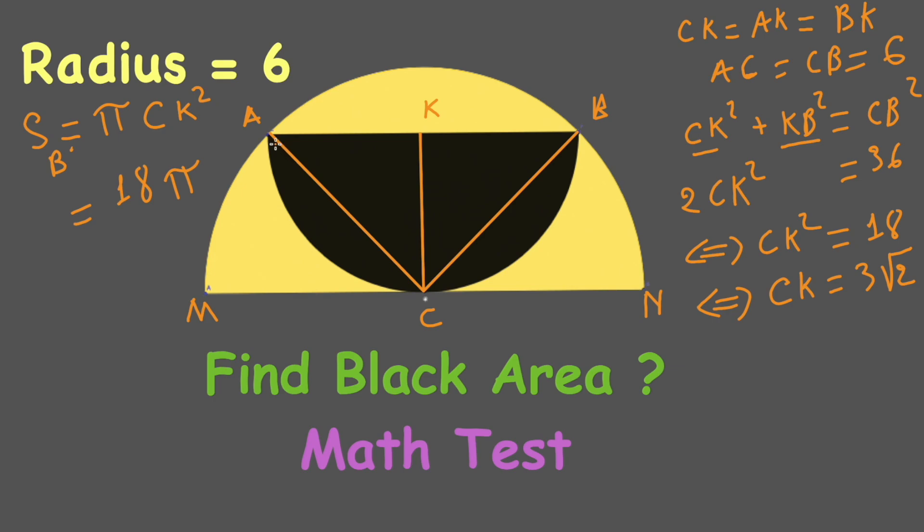But the problem requires us to calculate the semicircle, which is half of the black circle. So the area equals 18π divided by 2, which equals 9π. The answer is 9π.